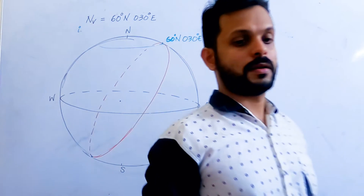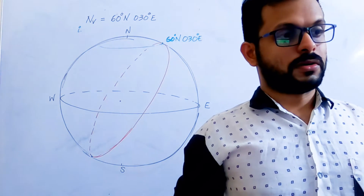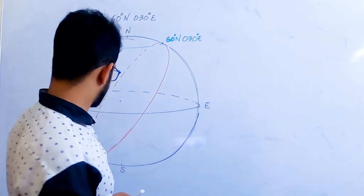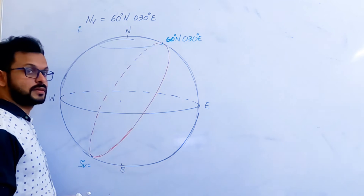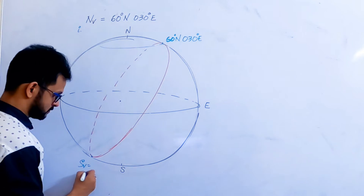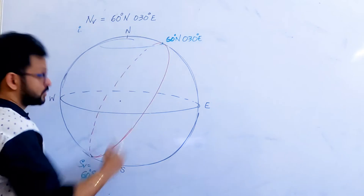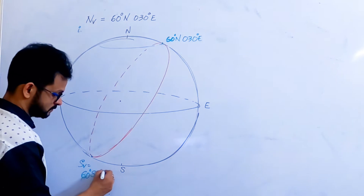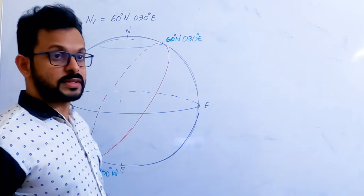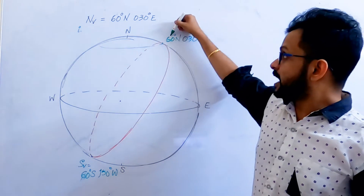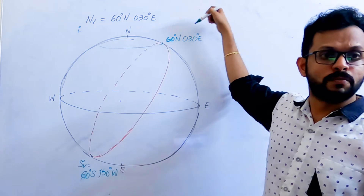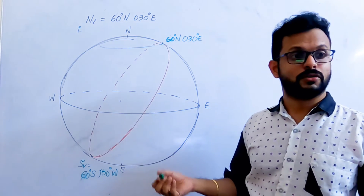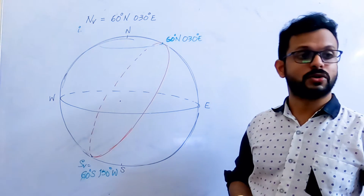Question number one: find the southern vertex. If the northern vertex is 60 degrees north, 30 degrees east, what can you say about the southern vertex? It will be 60 degrees south — same latitude with the opposite sign. And what about the meridian? It will be 150 degrees west. So basically, the southern vertex and northern vertex are antipodal points, which means the latitude values are the same with opposite sign, and the longitudes must add up to 180. So 180 minus 30 equals 150, and since the northern vertex is east, the southern vertex is west. The southern vertex is 60 degrees south, 150 degrees west.